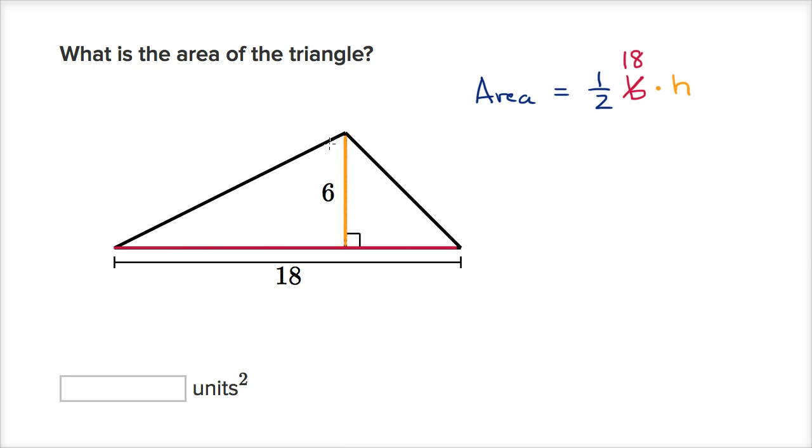They give it to us. They don't always give it to you, but in this example they do. So the height is six. So now we just have to compute what 1/2 times 18 times 6 is.